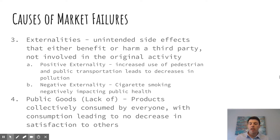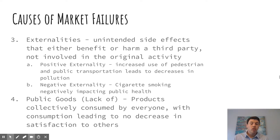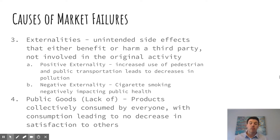The other two causes are externalities and public goods, or the lack thereof. An externality is a side effect — a benefit or harm to a third party who isn't involved in the original transaction but is affected nonetheless. A positive externality would be something like a government increasing public transportation, which decreases pollution as a beneficial side effect. On the negative end, cigarette smoking negatively impacts public health — that's a negative externality, where people not involved in the transaction are affected nonetheless.